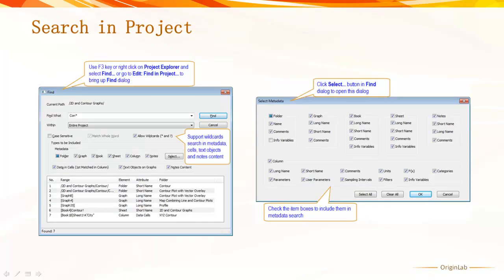In the new Find in Project dialog, you can find metadata associated with various objects in your project, such as window, sheet, column, legend, and graph text for example. You can also narrow where to search in the Select Metadata dialog.